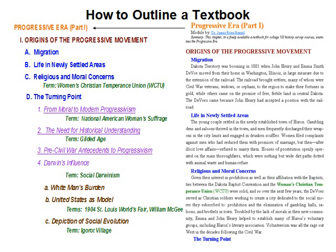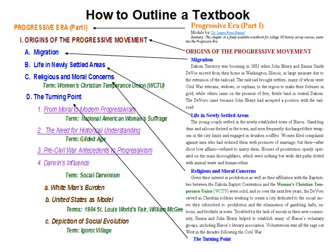Note the chapter title in orange on the right — 'Progressive Era, Part One' — becomes the outline's title. Then see how the first major chapter section in dark red, 'Origins of the Progressive Movement,' becomes the first major division in the outline. This major division is broken up into equal points in blue, each placed as an equally important point in the outline: A. Migration, B. Life in the Newly Settled Areas, C. Religious and Moral Concerns, and D. The Turning Point.